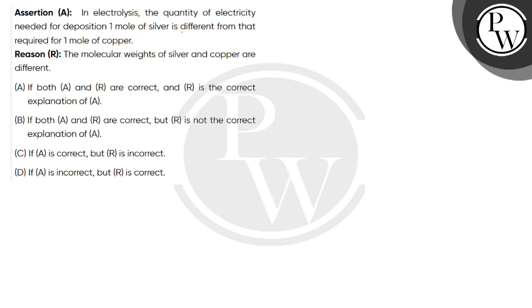Assertion says in electrolysis the quantity of electricity needed for deposition of one mole of silver is different from that required for one mole of copper. And reason says the molecular weights of silver and copper are different.